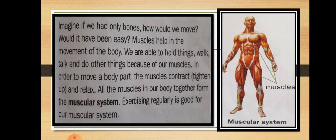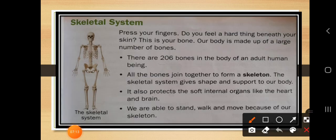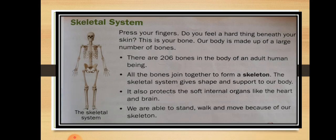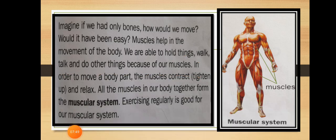Similarly, in our body the muscles are also present — this is the muscular system. You can observe the muscles in our skin. If your body had only bones and no protective layer of muscles, your body would look like a skeleton. To protect the bones, we have the muscular system. Muscles help in the movement of the body. With the help of muscles, we can hold things, walk, talk, and do other activities.